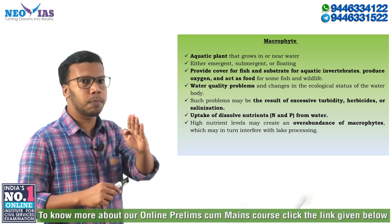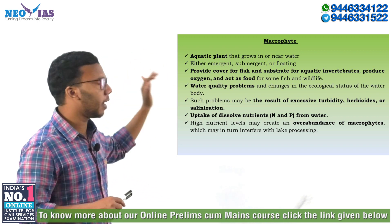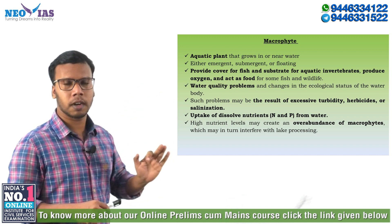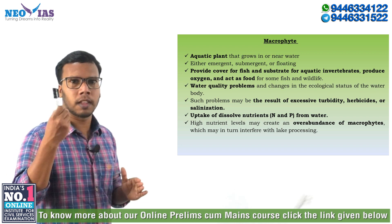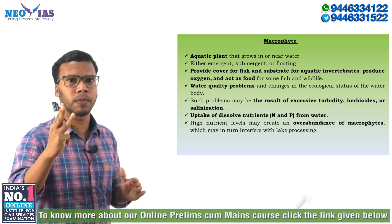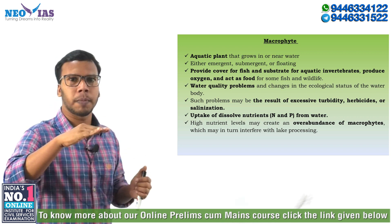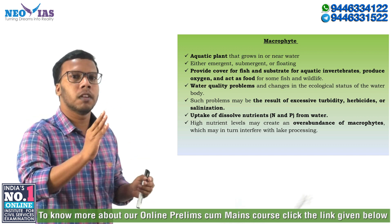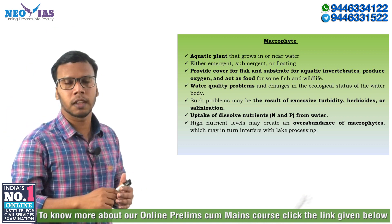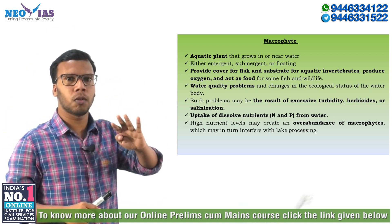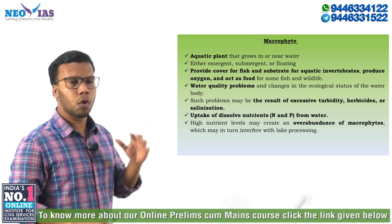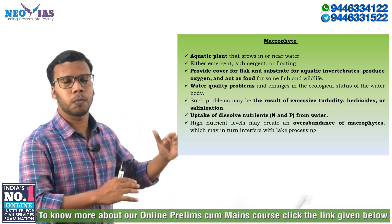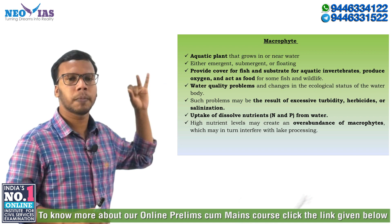There are mainly three types of macrophytes: emergent, submergent, and floating. Whenever you are visiting lakes and ponds, you can see three types of vegetation: some plants may be floating, some will be seen underneath the water, and some will be emerging from the top of the water.